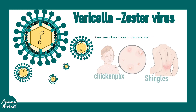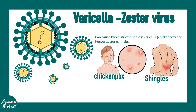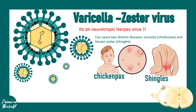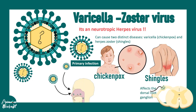Varicella zoster virus is responsible for chickenpox and can lead to two distinct diseases: varicella, which is chickenpox, and shingles. Shingles occur later in the lifespan. It's important to note that varicella zoster is a neurotropic herpes virus, and shingles reappear from a dormant infection, affecting the dorsal root ganglion.